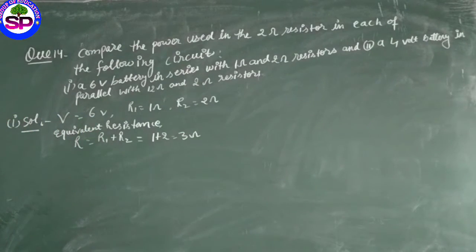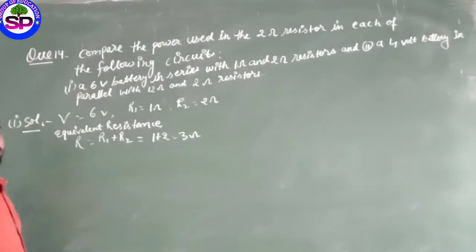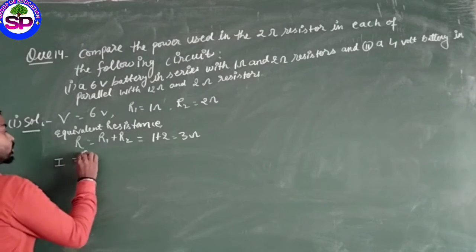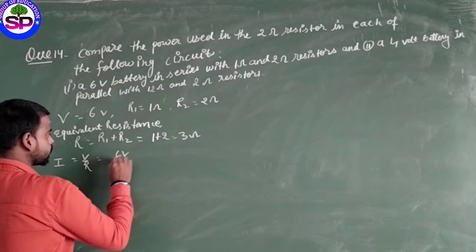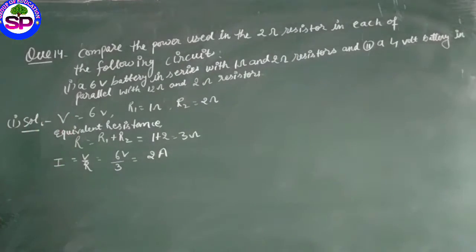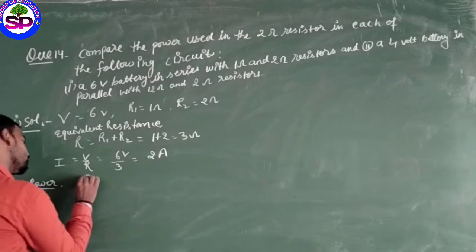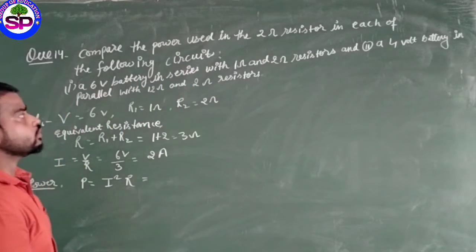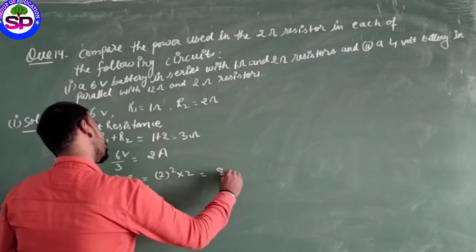Now we need to find power. We have V and R, but power formula is I squared R, so we need to find current. Current I equals V upon R by Ohm's law, so 6 volt upon 3 equals 2 ampere. Now power P equals I squared R. For the 2 ohm resistor, 2 squared into 2 equals 8 watt.